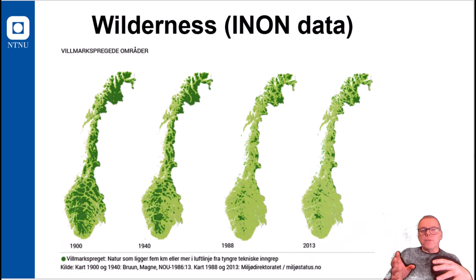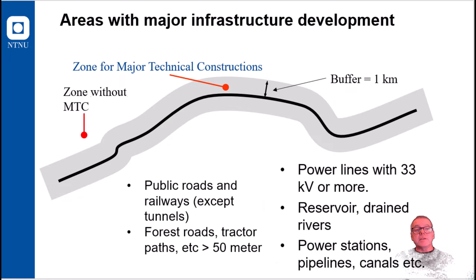One application of the buffer operation is the generation of the dataset called INON or the wilderness-like areas in Norway. This is now done by the environmental agency in Norway and they update this, I think, every five years. But they have also made this dataset showing how the situation was dating back. And the series of maps here shows a very serious decline in wilderness-like areas in Norway.